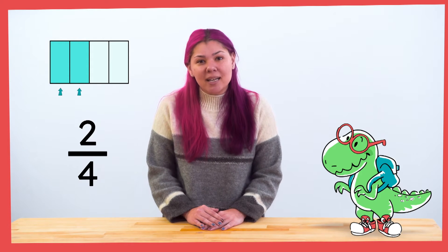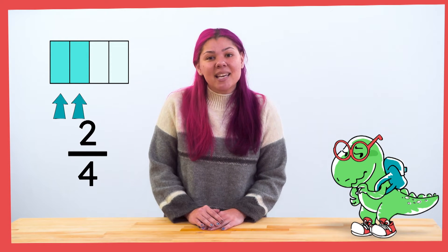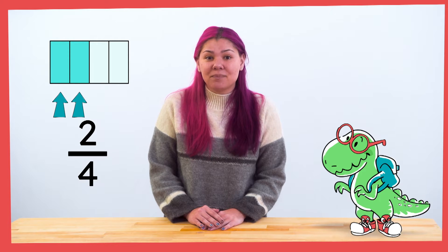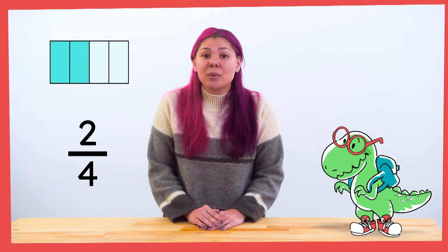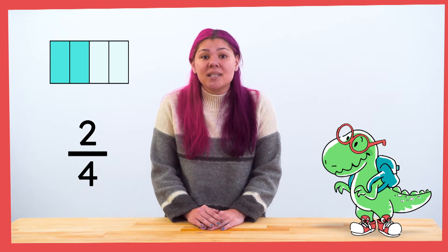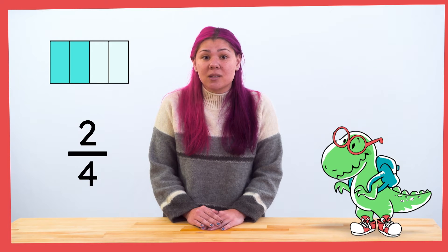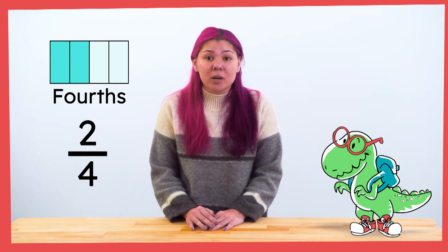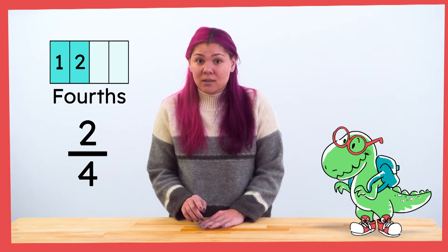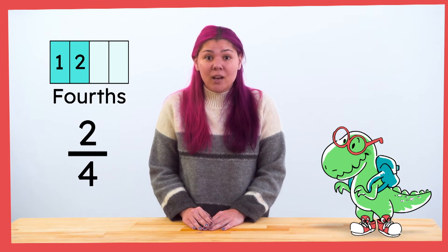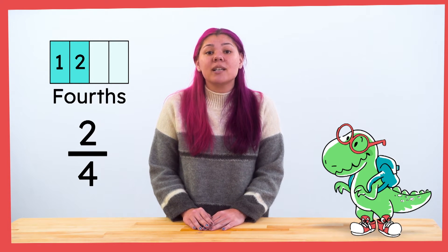How many parts are shaded in this model? Let's count the fourths that are shaded. It's important to know that fractions can represent part of a whole. So when we count, we're going to say the unit we're counting. In this case, the units are called fourths. So we say: one-fourth, two-fourths. We counted two-fourths. The numerator is the number of units we've counted, so in two-fourths, the numerator is two.